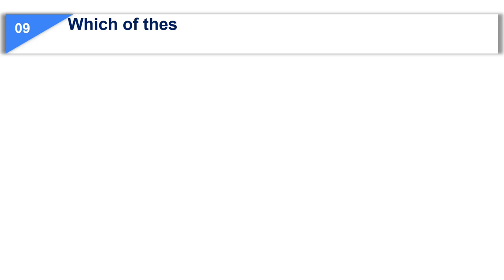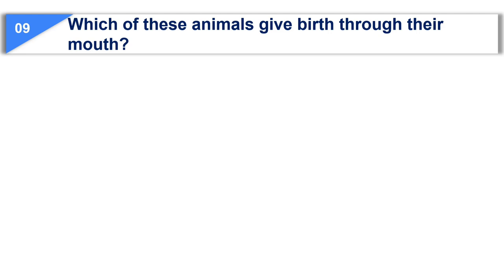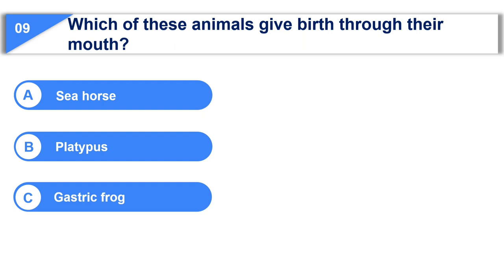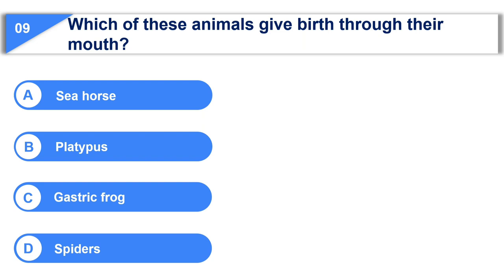The ninth question is, which of these animals give birth through their mouth? Option A, seahorse. Option B, platypus. Option C, gastric frog. Option D, spiders.